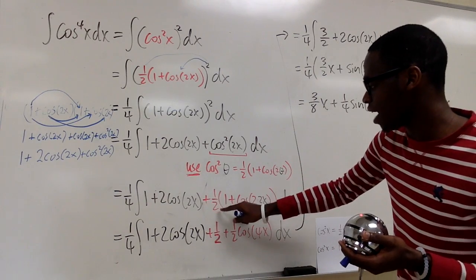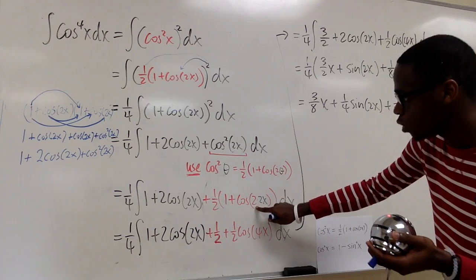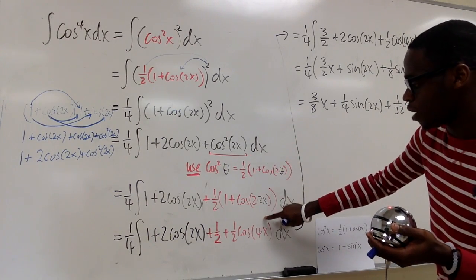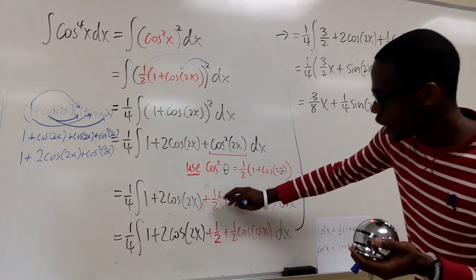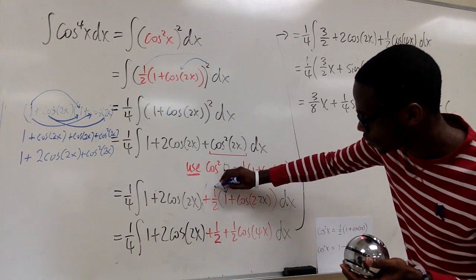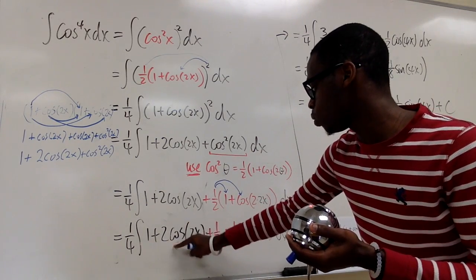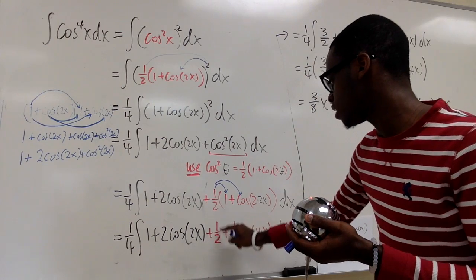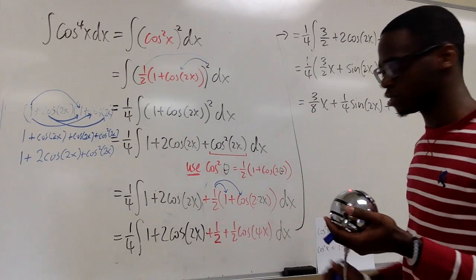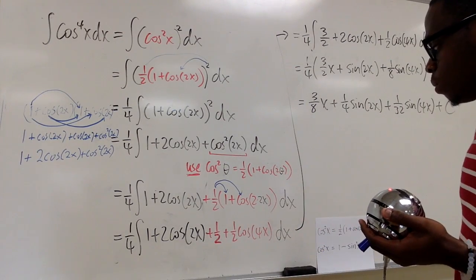Then we have ½ times (1 + cosine(4x)), since 2 times the input 2x gives 4x. Now we distribute the ½ into that term, giving us 1 + 2·cosine(2x) plus ½ plus ½·cosine(4x). Now we're ready to take the integral, but first we combine like terms.